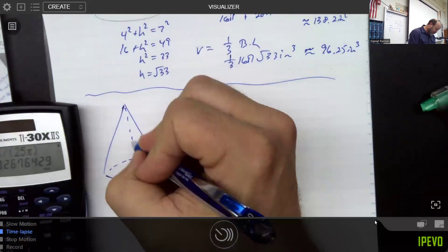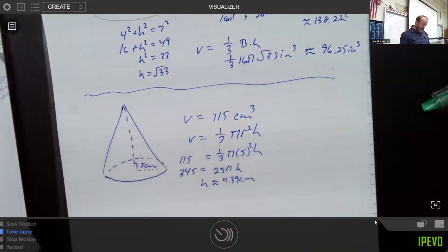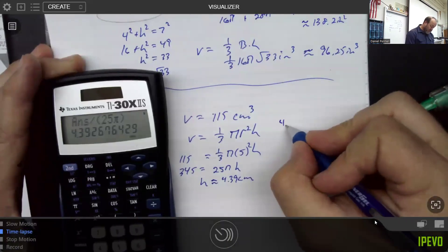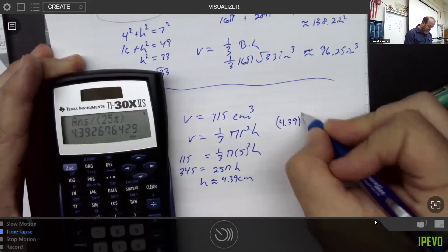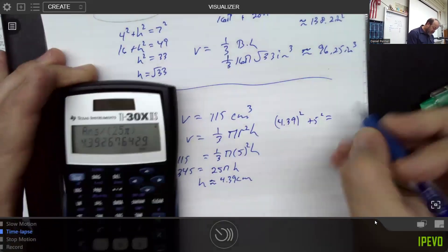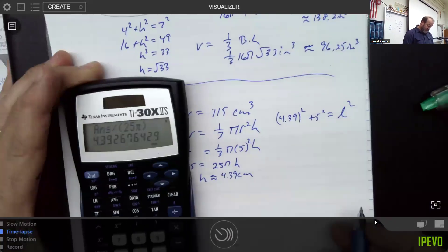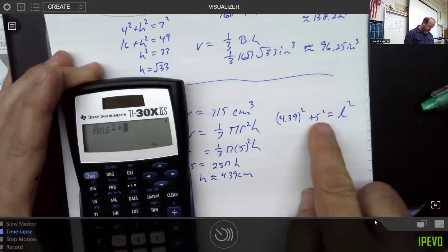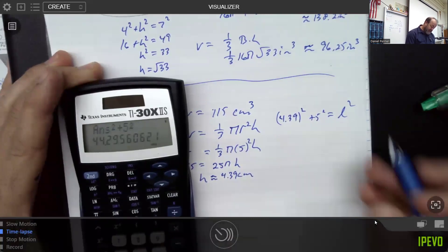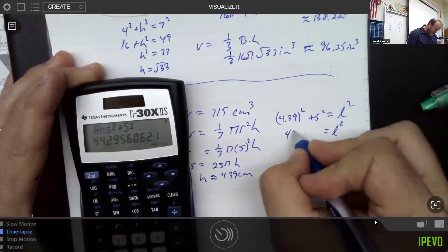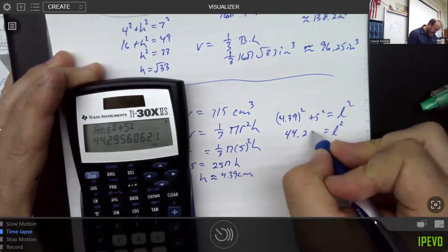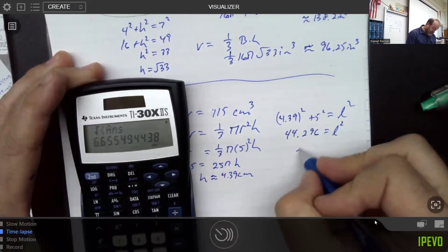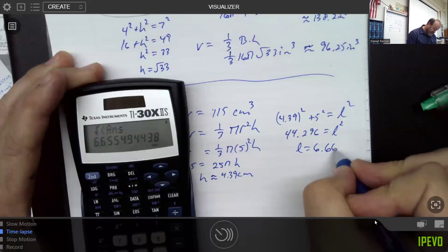Well, I'm not going to keep going too much on this, because if you notice that we have that, we could use the Pythagorean theorem to say that 4.39 squared plus 5 squared would be our slant height squared. So let's see, that one squared plus 5 squared. And then I would need to take the square root of that value. The square root of that answer. And I got that this slant height is 6.66 centimeters.